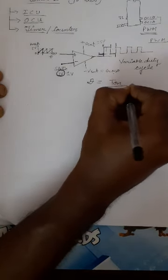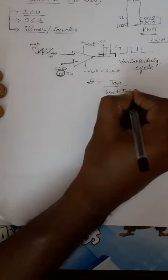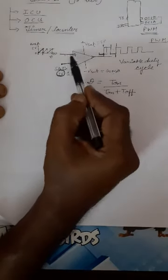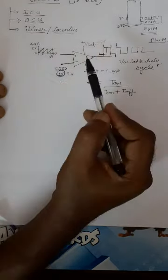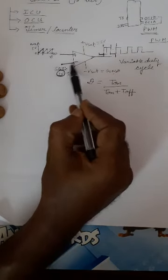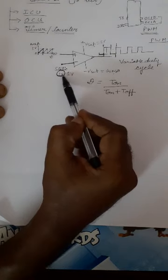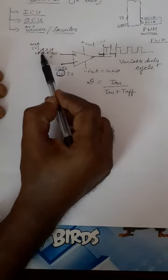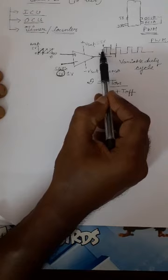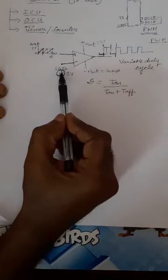The duty cycle is represented as D = on-time / (on-time + off-time). The frequency of the output PWM waveform is entirely dependent on the frequency of the sawtooth waveform, while the width of the on-time and off-time depends on the comparison voltage value being used.